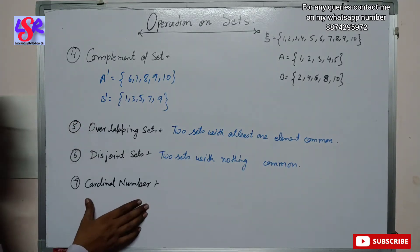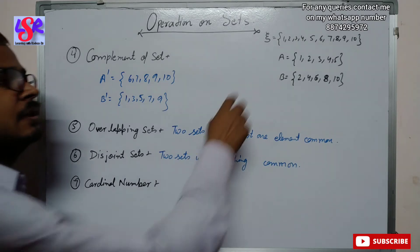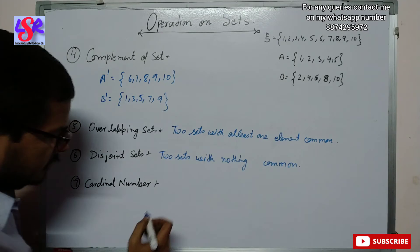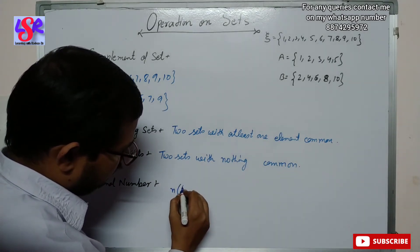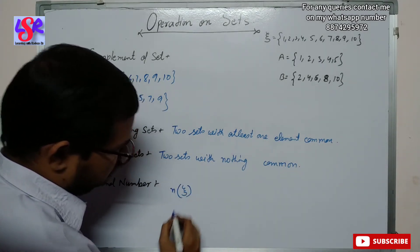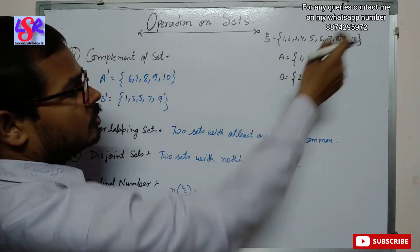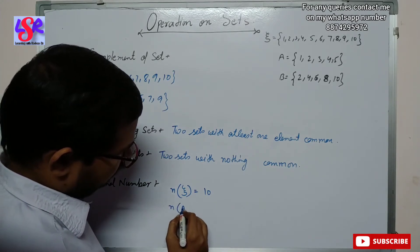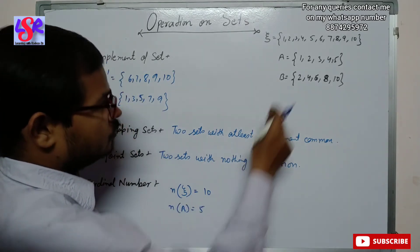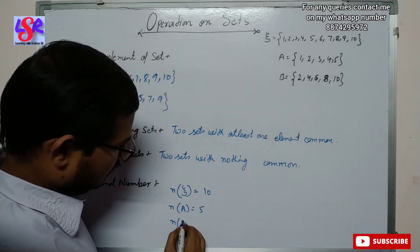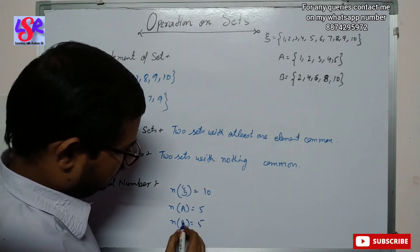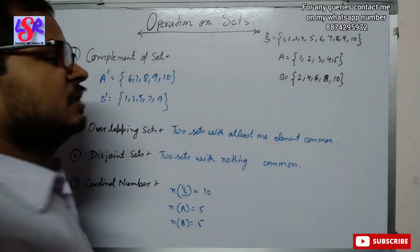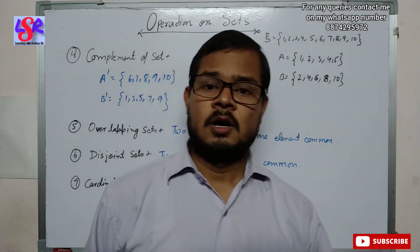Now we have the cardinal number. In cardinal number, we state the number of elements in a particular set. For the universal set, it is written as n(U) = 10, since we have elements from 1 to 10. For Set A, we have 5 elements (1 to 5), and for Set B we also have 5 elements. So cardinal number just tells the number of elements in a particular set. Now let's begin with Exercise 6.1.